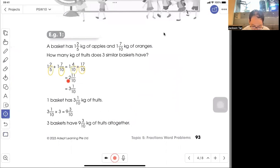Use 10 as the common denominator. Then you get 2 11/10. Change to simplest form: 3 1/10. So 1 basket has 3 1/10 kg of fruit. Then multiply by 3 and you get 9 3/10. So 3 baskets have 9 3/10 kg of fruit altogether.